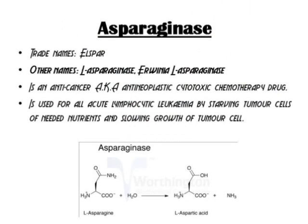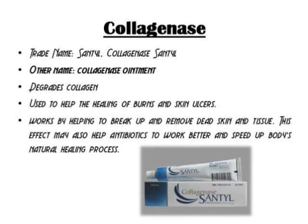Enzyme is also widely used in medicine industries. Asparaginase is an anti-cancer, anti-neoplastic cytotoxic chemotherapy drug used for acute lymphocytic leukemia by starving tumor cells of needed nutrients and slowing their growth. The drug names include L-Asparaginase or Erwinase L-Asparaginase, and a common product on the market is L-Spar. Collagenase is also used in medicine; it functions to degrade collagen and is used to help the healing of burns and skin ulcers. Collagenase works by breaking up and removing dead skin and tissue, which may help antibiotics work better and speed up the body's natural healing process. The drug name is Collagenase Santyl, which is available in the market.